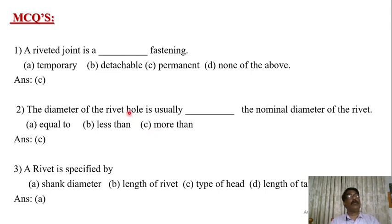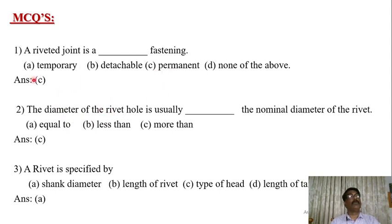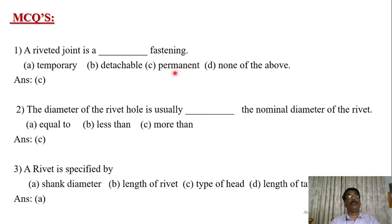Now we have multiple choice questions. The first question: a riveted joint is a dash fastening — temporary, detachable, permanent, or none of the above. The answer is C: a riveted joint is a permanent fastening. Once parts are joined by rivets, they cannot be separated or disassembled without damaging the connected parts.